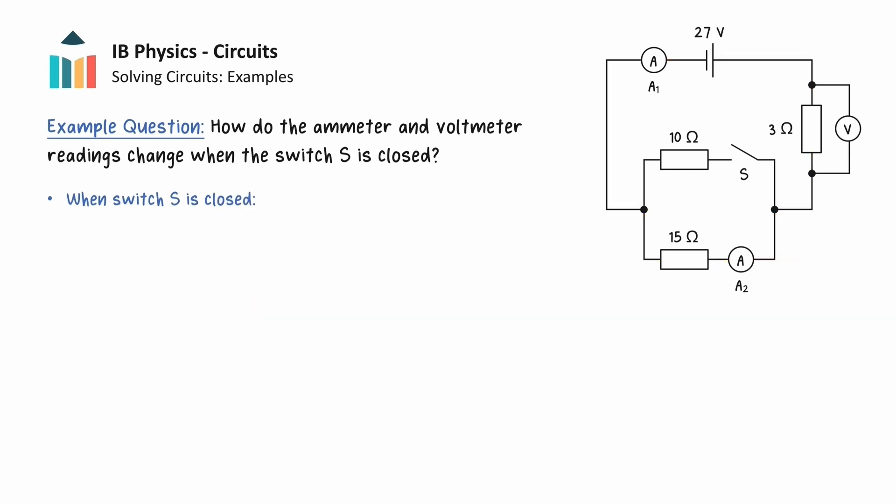We will now examine the circuit when the switch S is closed. When this occurs, we now have the 10 ohm resistor connected in parallel with the 15 ohm resistor, so the total resistance of the circuit has changed.